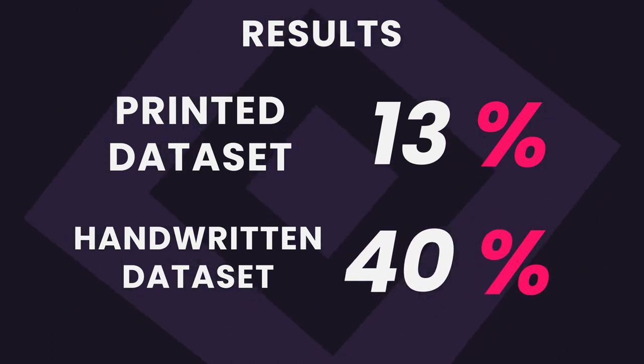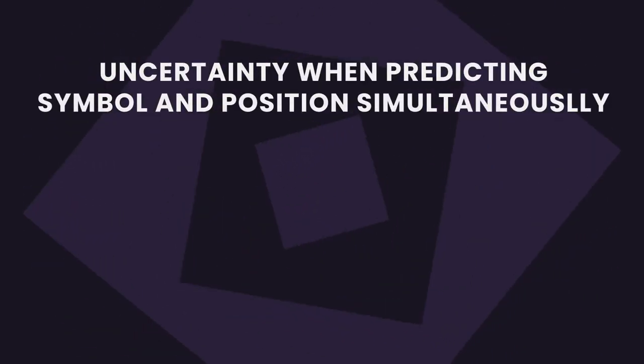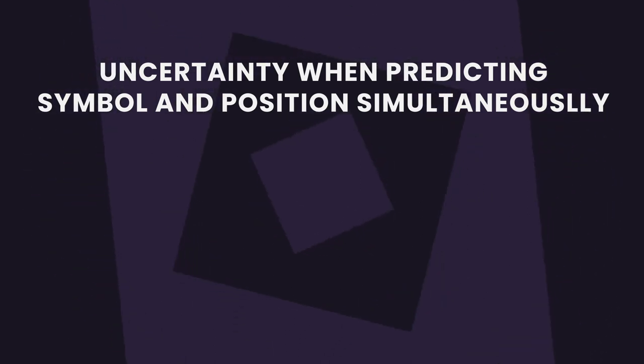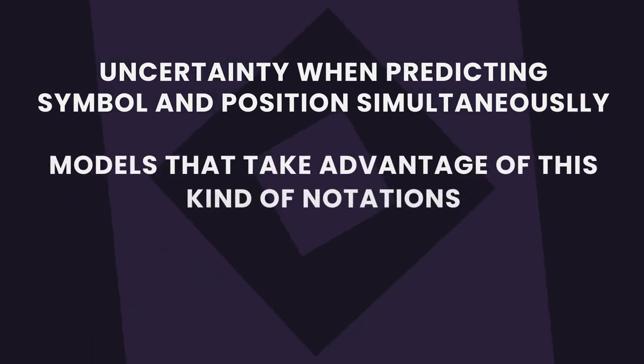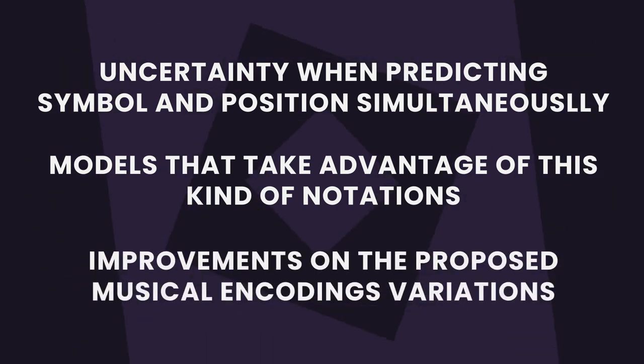Given the results, we can assert that our premise was right. This work proves that it is worth exploring and researching new ways of encoding music for the purpose of optical recognition from document images, as one of the proposed alternatives outperforms the state-of-the-art. However, this is not the end. Some questions open up from this research: Which uncertainty is generated from predicting the position in the staff and the glyph simultaneously? Could there exist a model that could profit from these types of codifications? Can these encodings be pushed further? These questions are relegated to further research.